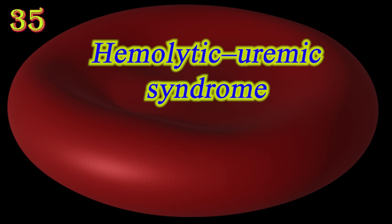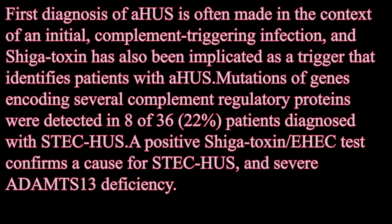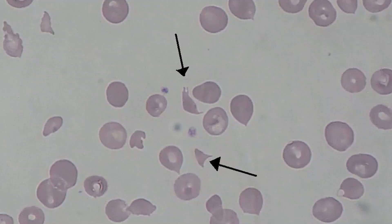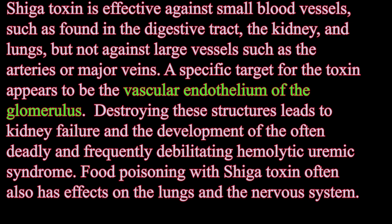Hemolytic uremic syndrome is a group of blood disorders characterized by low RBC count, acute kidney failure, and thrombocytopenia. Most cases occur after infectious diarrhea due to specific organisms: E. coli, Streptococcus pneumoniae, Shigella, Salmonella, and certain medications. The underlying mechanism typically involves the production of Shiga toxins.